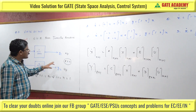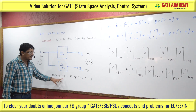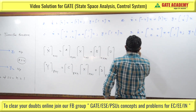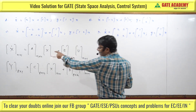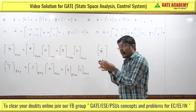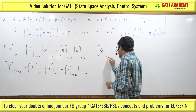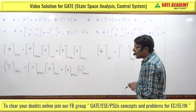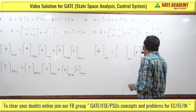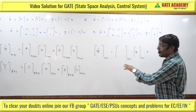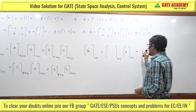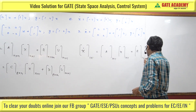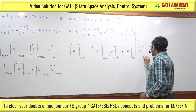Here the number of state variables is 1 (order of the system is 1), input is 1, and output is 2. So x-dot is 1×1, the A matrix order is 1×1, the B matrix order is N×M = 1×1, since there is a single input. U is 1×1.